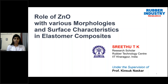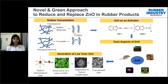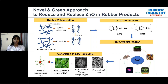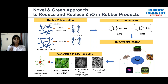Today I will discuss the role of zinc oxide with various morphologies and surface characteristics in elastomer composites. Rubber has played a wider role in civilization, and vulcanization is a process of transforming a plastic rubber product into highly elastic products by forming a three-dimensional network structure. This process uses chemicals such as sulfur, accelerators, and activators like zinc oxide. About 50% of the global consumption of zinc oxide goes to the rubber industry alone. A recent study conducted in Sweden and Britain shows that about 150 tons of zinc is leaching out from tires every year, which is toxic to ecological species, micro-contaminants, and algae.